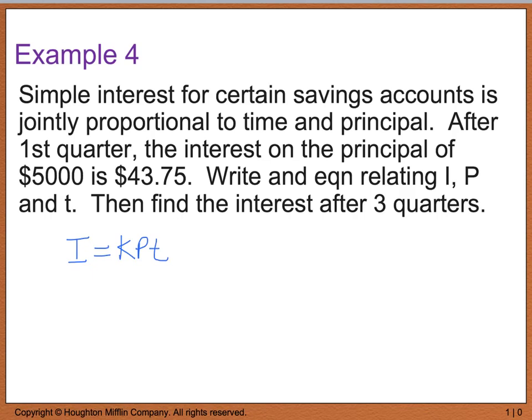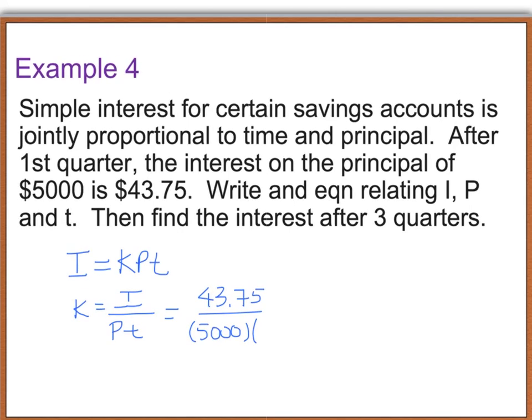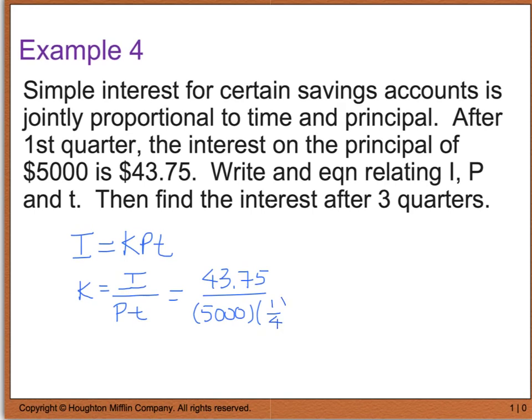So k is going to equal I divided by P times T. And if I plug in my values, I know that my interest was $43.75 on $5,000 times, and because it says the first quarter, I have to show that as a quarter of a year, or my t value is going to be one-fourth for the value that I plug in. And if I simplify this, I found that k is equal to 0.035.